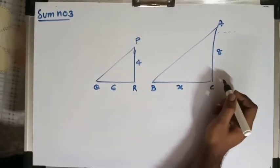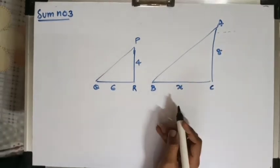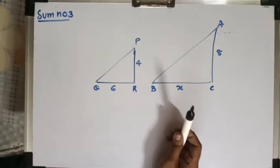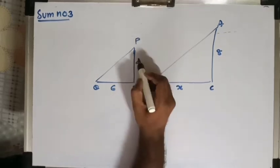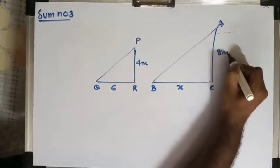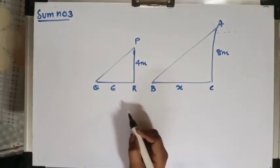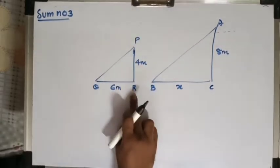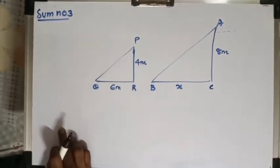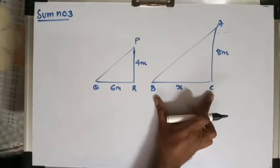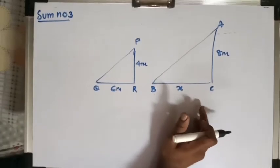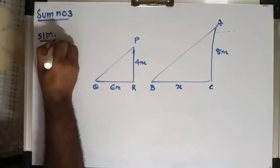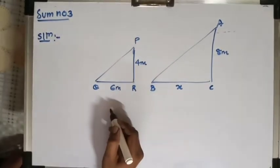There are two poles: one of height 4 meters (the smaller pole, triangle PRQ, with shadow QR of 6 meters) and another of height 8 meters (the larger pole, triangle ACB, with shadow BC of length X). We need to find the length of the shadow of the bigger pole at the same time.